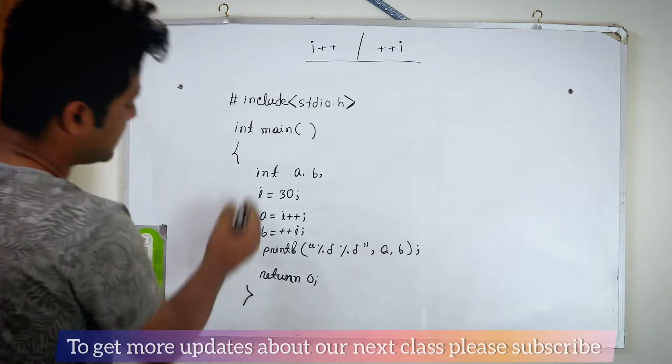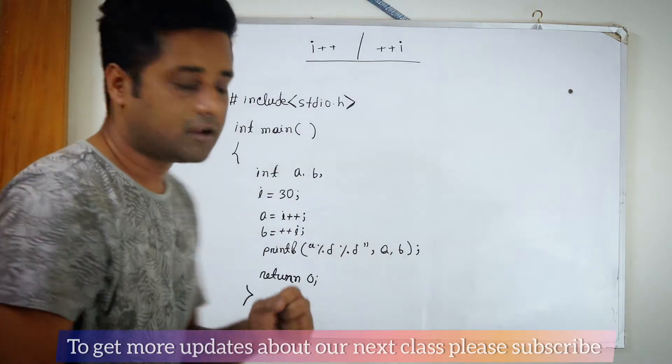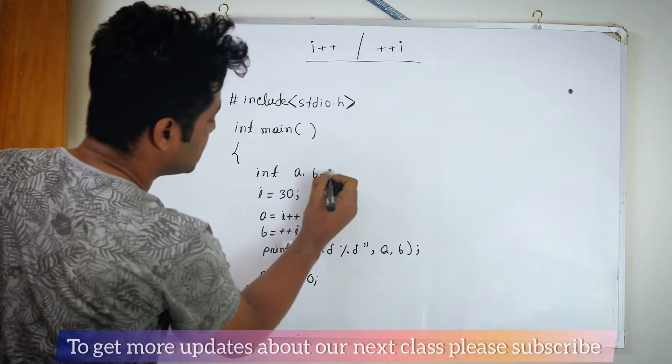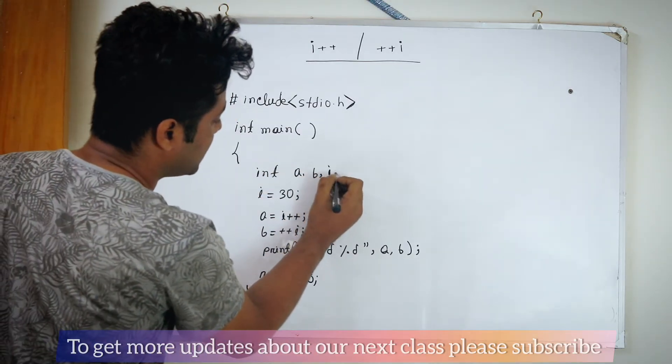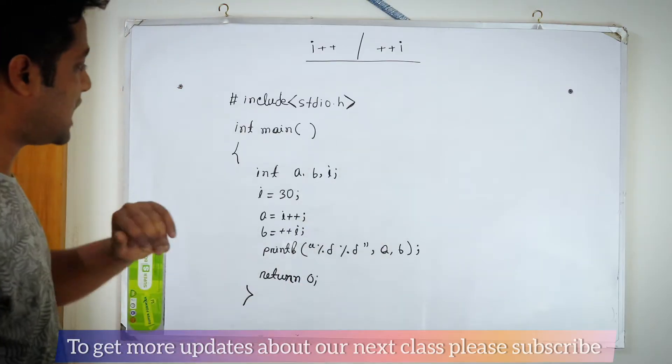So first, we have three variables: A, B, and I.